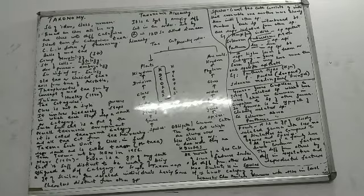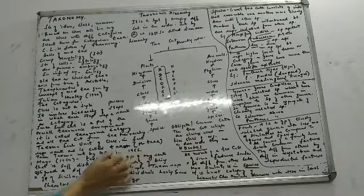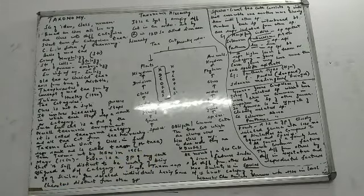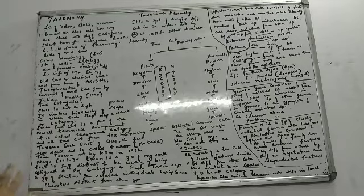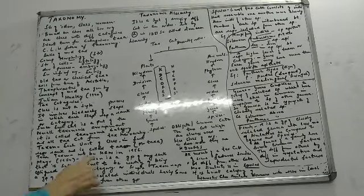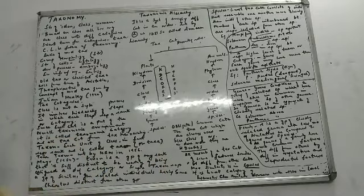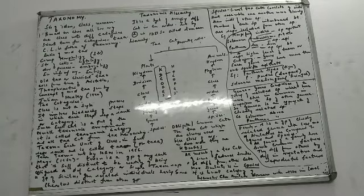The term taxon was introduced by ICBN in 1956. Mayr — M-A-Y-R — tried to define taxon as: a group of any rank that has characters sufficiently distinct to be worthy of being assigned a definite category.